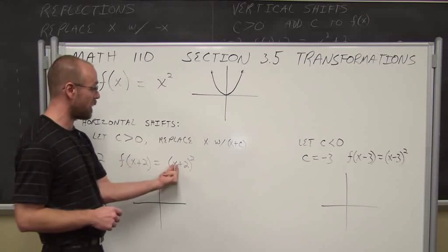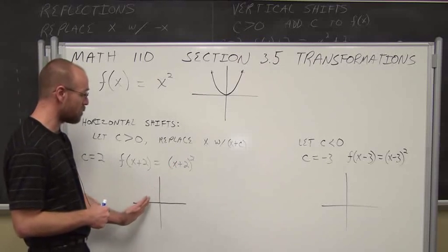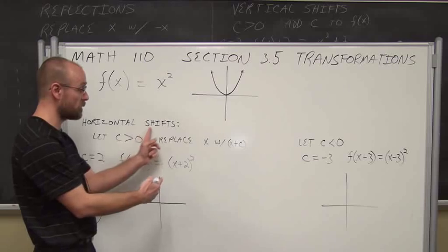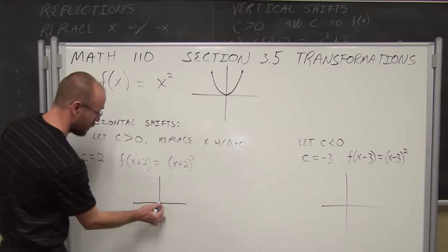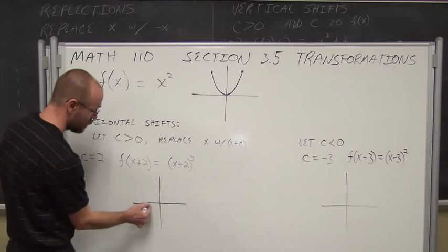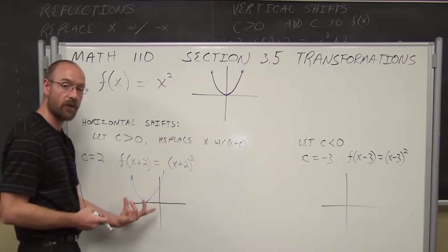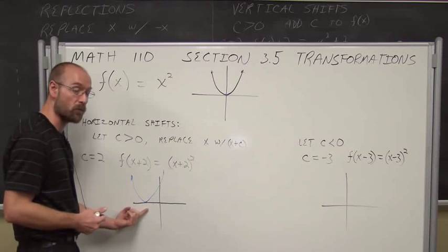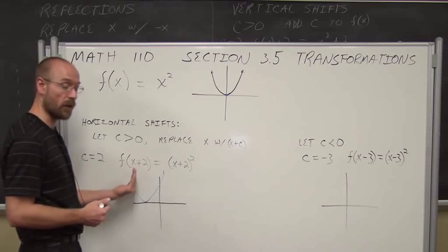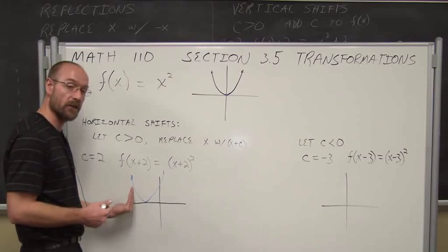That changes our function — instead of just being x squared, we have x plus 2 quantity squared. One way to look at it: what would x have to be to get back to our library function? Well, it would have to be a negative 2. Essentially, what we're doing is moving or shifting our graph to the left two spots. So instead of having my parabola shape at the origin, I'm going to shift it over two units with the exact same shape. This is our shift to the left. Notice the direction is opposite of what we see — x plus 2 shifts the graph two units to the left.